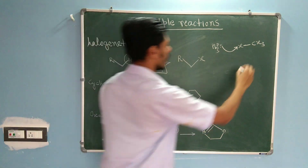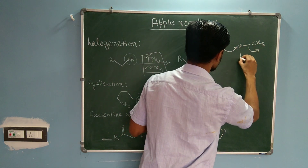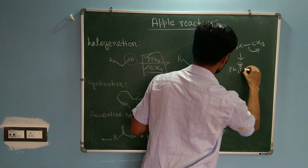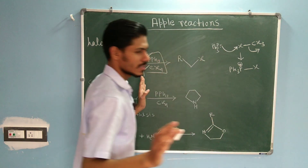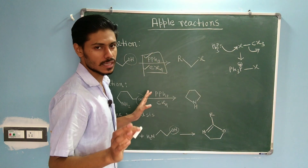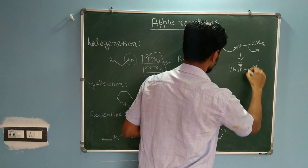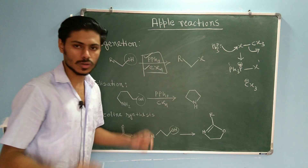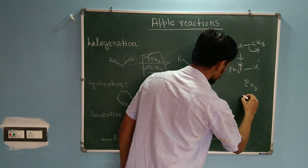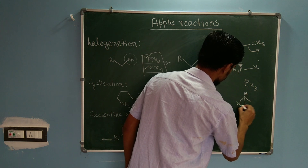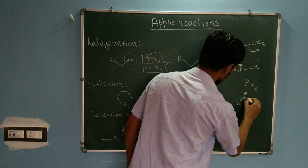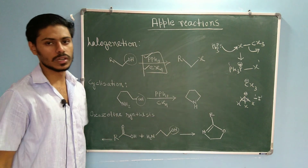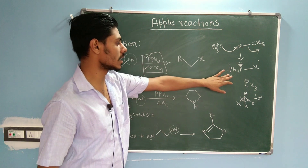Triphenylphosphine uses its lone pair to attack the halogen atom X of CX4. The CX3 group then departs, giving you Ph3P+–X as the active reagent. The CX3⁻ is a good leaving group because the negative charge on carbon is stabilized by the inductive effect of the three halogen atoms. So you get Ph3P+–X as the active reagent.